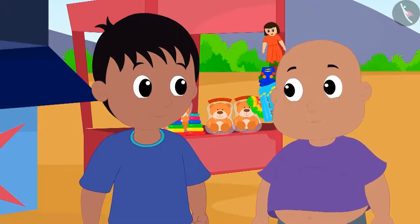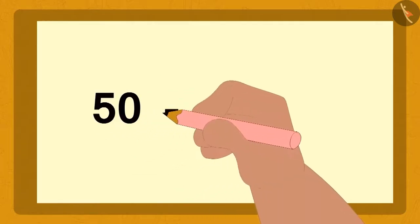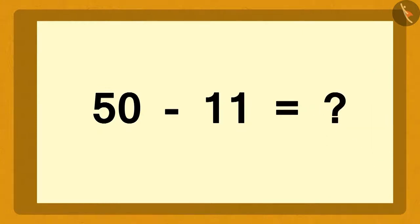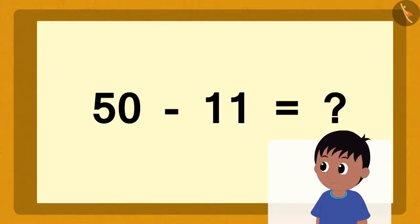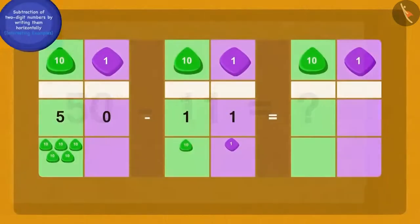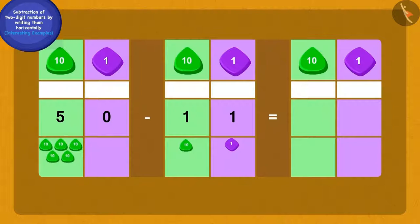Bablu immediately wrote this question on a piece of paper, but Raju started thinking because he could not understand how he could possibly subtract one ones of eleven from zero ones of fifty. Children, do you think this is possible? Let us see how Bablu solved it.